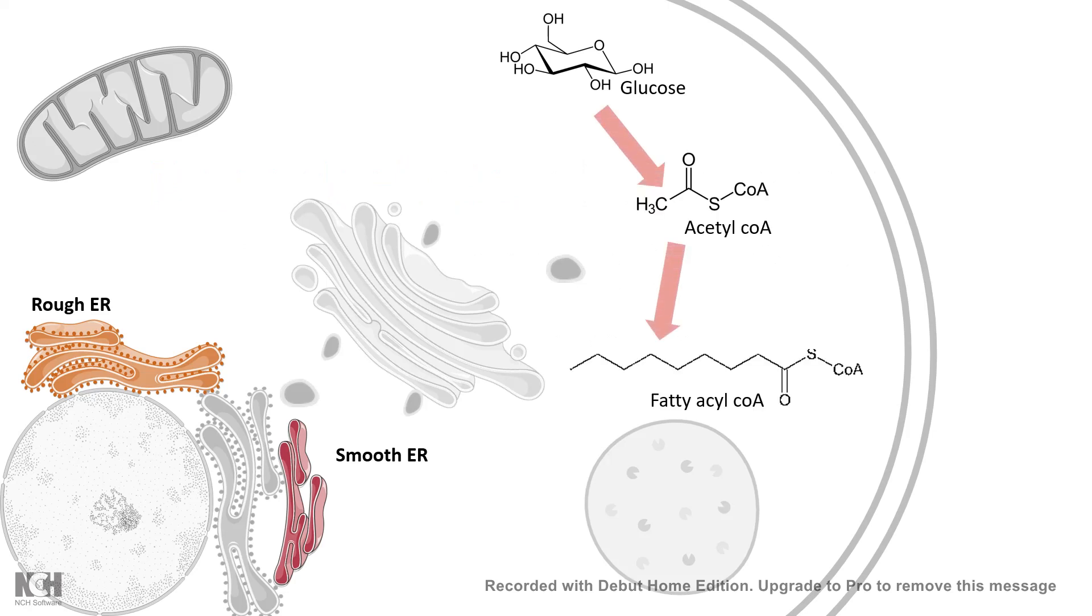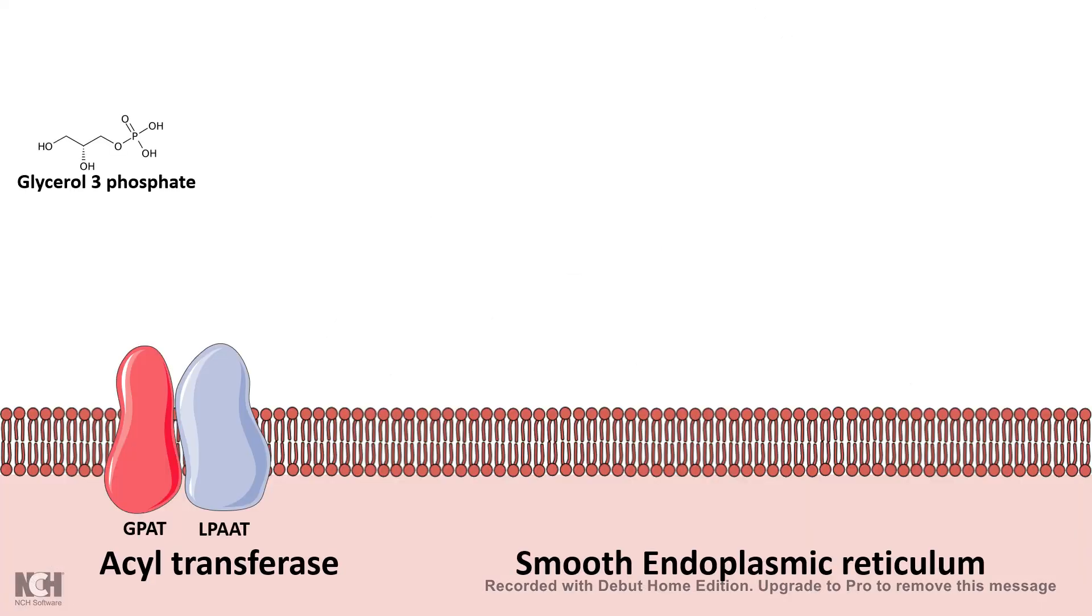And acetyl-CoA further gets converted to fatty acyl-CoA. Now, this fatty acyl-CoA along with glycerol-3-phosphate on the surface of a smooth endoplasmic reticulum can get converted to phosphatidic acid by the help of the enzyme acyltransferase. Now, this phosphatidic acid is one of the key components for phospholipid biosynthesis.